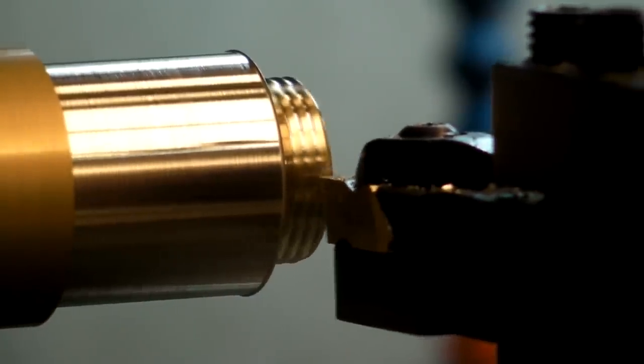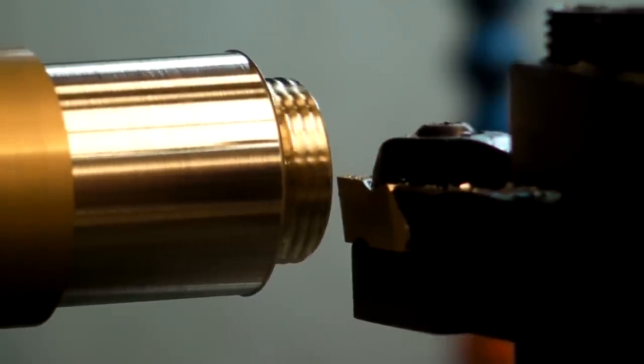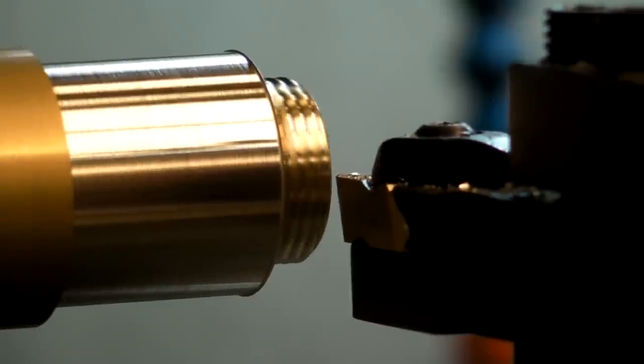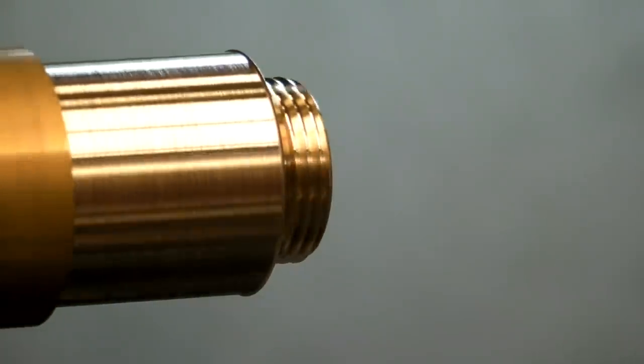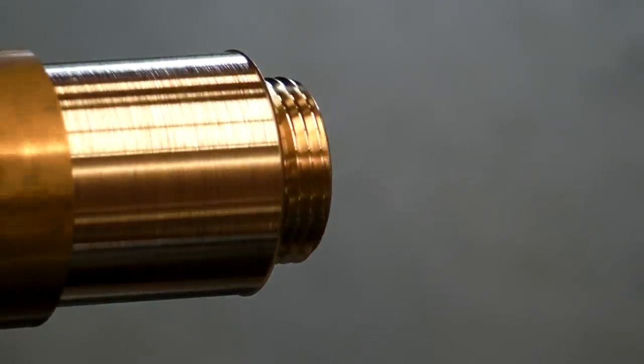An advantage to this is that the process can be paused and restarted reliably without the need to realign the tool with the beginning of the threads. As long as the part is not removed from the vise, the machine will always remember exactly where the threads begin and end.